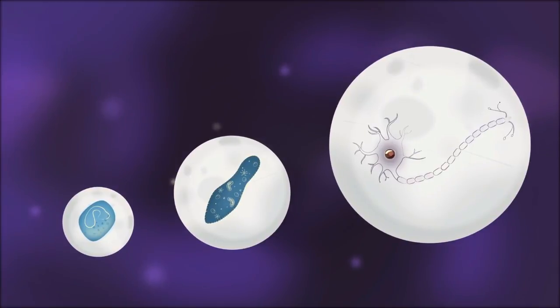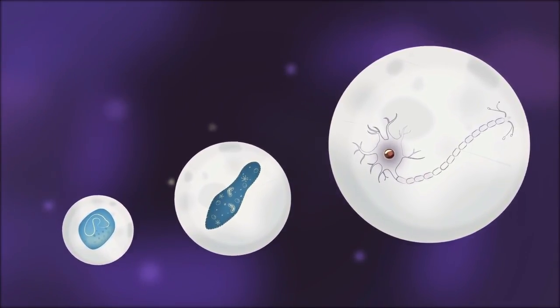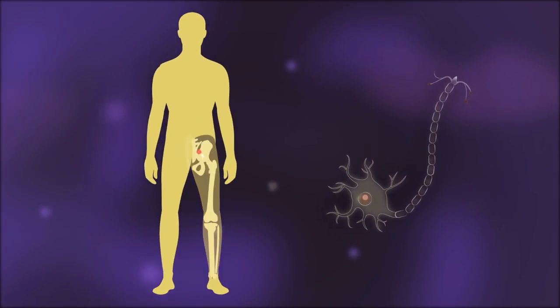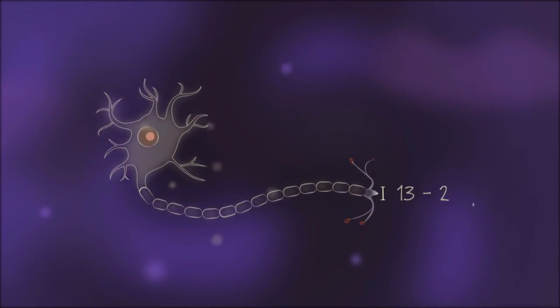Now, there are some exceptionally large cells that have adapted to cheat the system, like the body's longest cell, a neuron that stretches from the base of the spine to the foot. To compensate for its length, it's really thin, just a few micrometers in diameter.